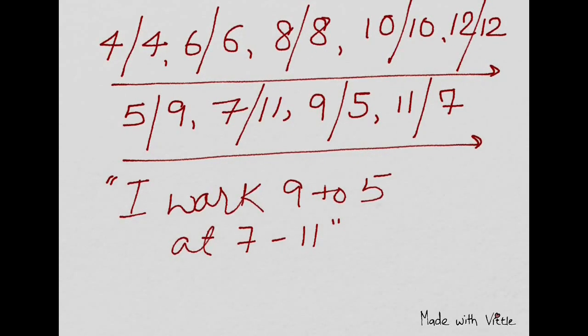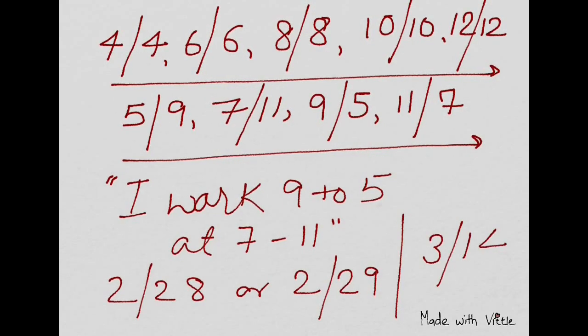There are two more dates: pi day and the last day of February. February has 28 days if the year is not a leap year, or 29 if it is a leap year. Pi day is 3/14.